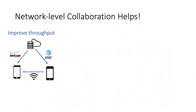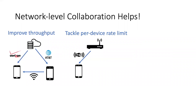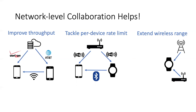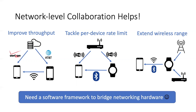This leads to much higher throughput compared to using a single device. Wi-Fi networks offered by public places such as hotels often impose per-device rate limits. Such a limit can be naturally overcome by multi-device collaboration since each participating device has its own Wi-Fi interface. In addition, wearables can be placed at a spot with good signal and act as Wi-Fi or LTE range extenders. When running low on battery, a smartphone can also offload power-hungry LTE access to a smartwatch paired over an energy-efficient Bluetooth or Wi-Fi link.